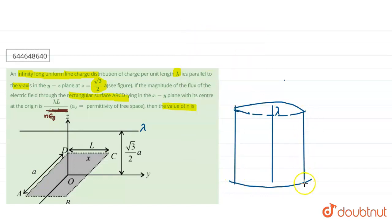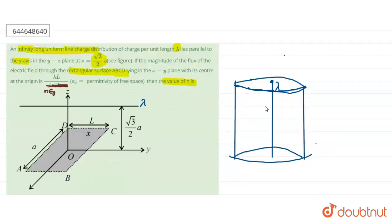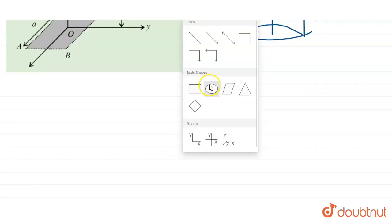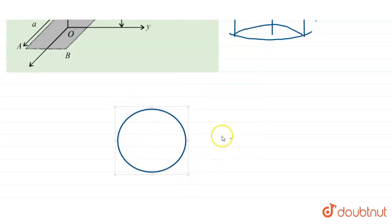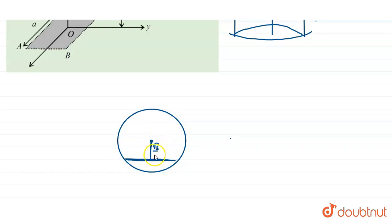The Gaussian surface of this line charge is a cylinder. A rectangular slab is placed at this point. Drawing the surface of the cylinder, the rectangular slab has its center at a distance of root 3 by 2a. We can construct a triangle here — the total length is a, so one side is a by 2 and the other side is a by 2.